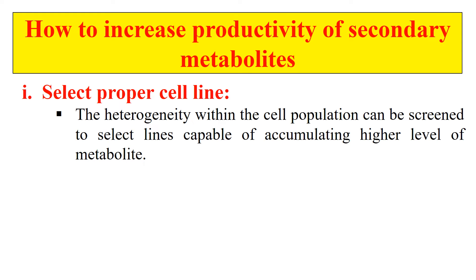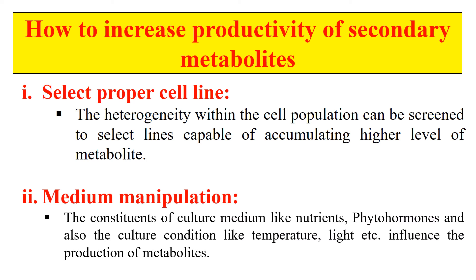Now, how can we increase the productivity of secondary metabolites? As we go with a normal procedure, the amount of secondary metabolite produced is very low. We can increase production by the following changes. Number one: select the proper cell line — we should select the cell line which has a high level of secondary metabolite accumulation. Number two: media manipulation — we can add certain growth regulators, phytohormones, or nutrients to the media in order to boost up the production of secondary metabolites.